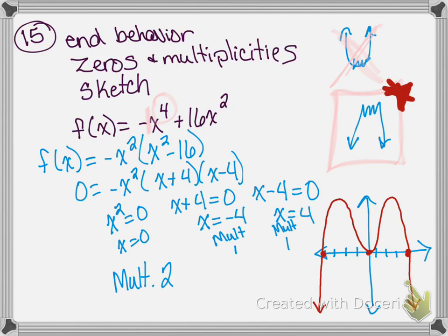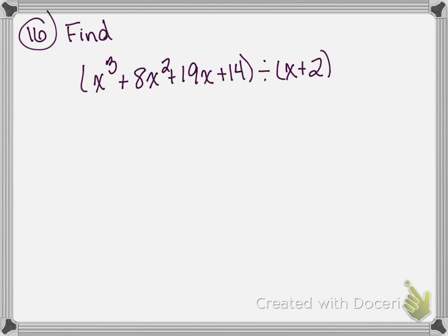Now we are doing synthetic division. The first thing we're going to do is take our x plus 2 and put it in our box. X plus 2 is our factor, so the solution we're going to use is negative 2. Then I take the coefficients: 1, 8, 19, and 14 — they are all positive. Now I just do my synthetic division — I bring the 1 down.